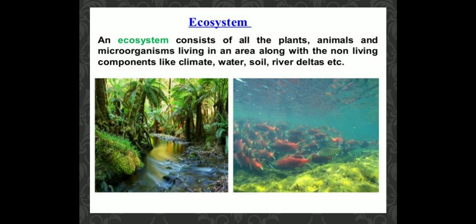Now, what is an ecosystem? An ecosystem is made up of all the plants, animals, and microorganisms in an area along with non-living components such as climate, soil, and river deltas. All these living and non-living components together make up an ecosystem. That's all for today's video.